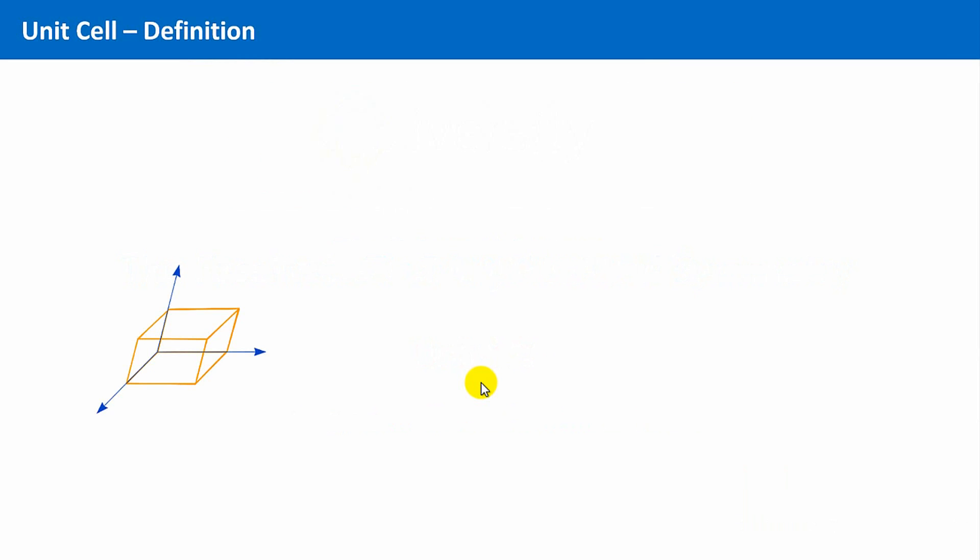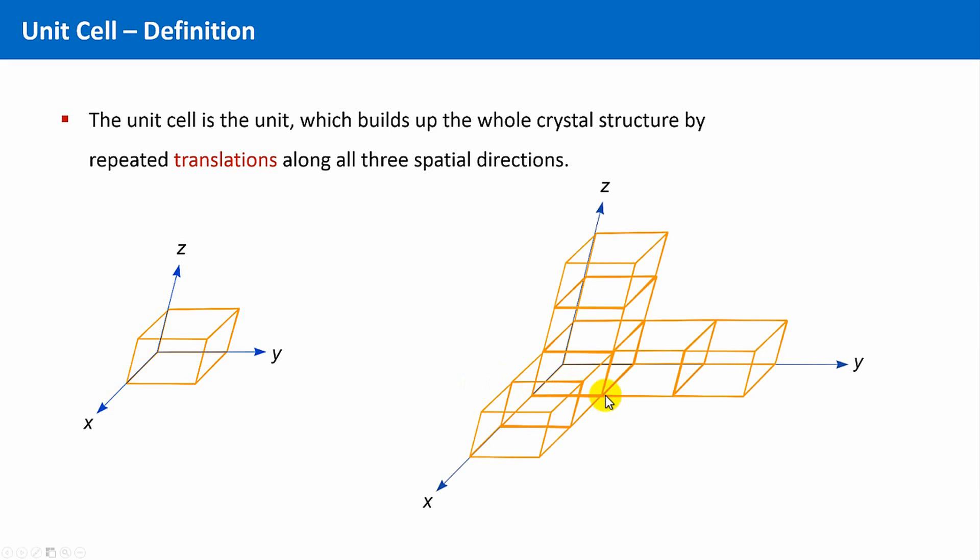The unit cell of a crystal is something that will build the whole crystal if you translate the unit cell along all three space directions again and again.